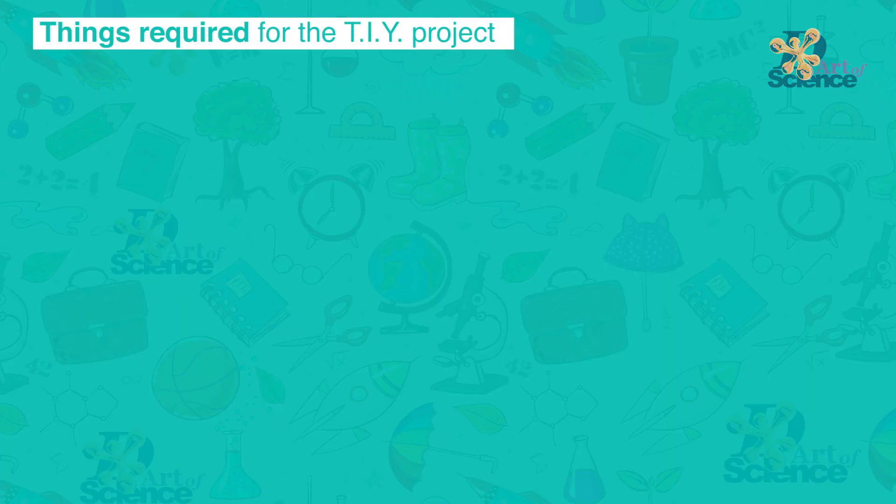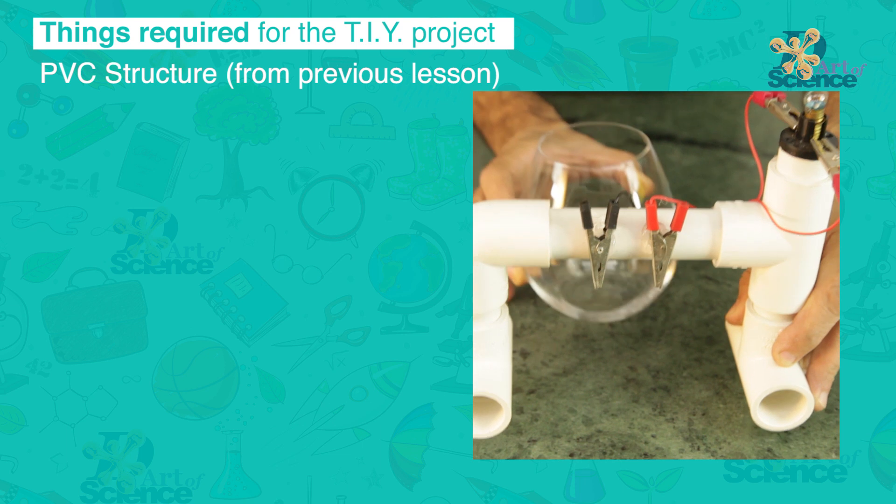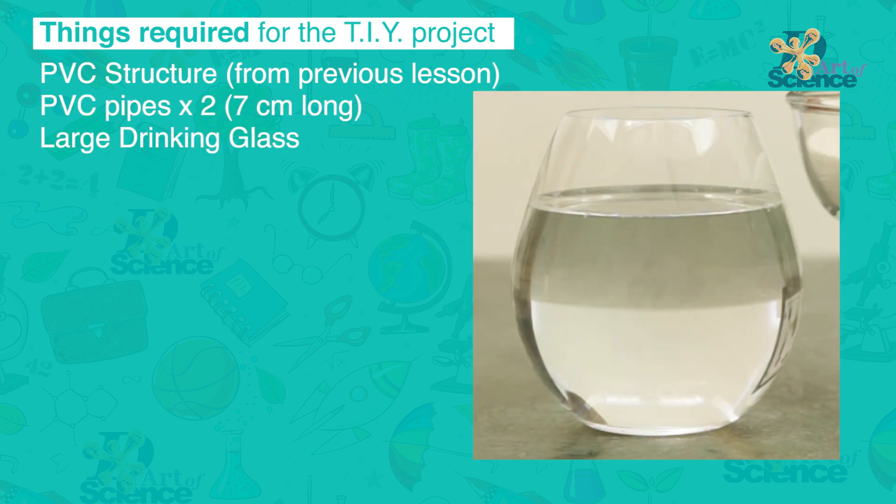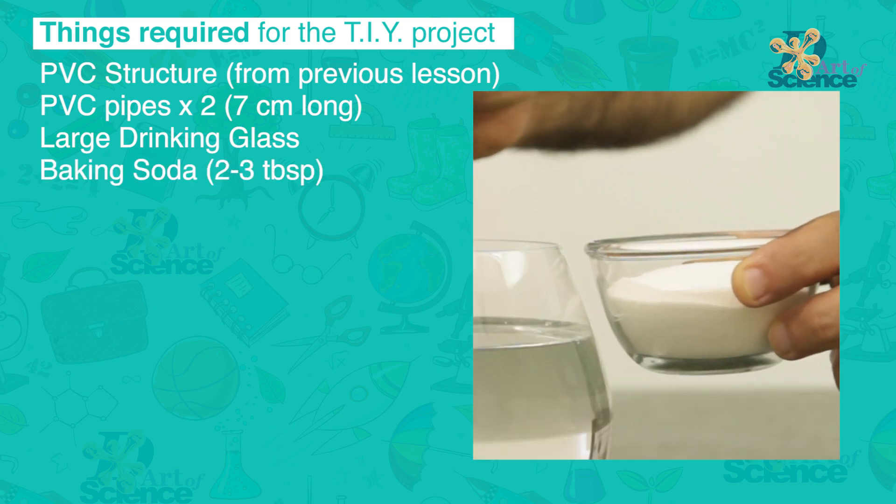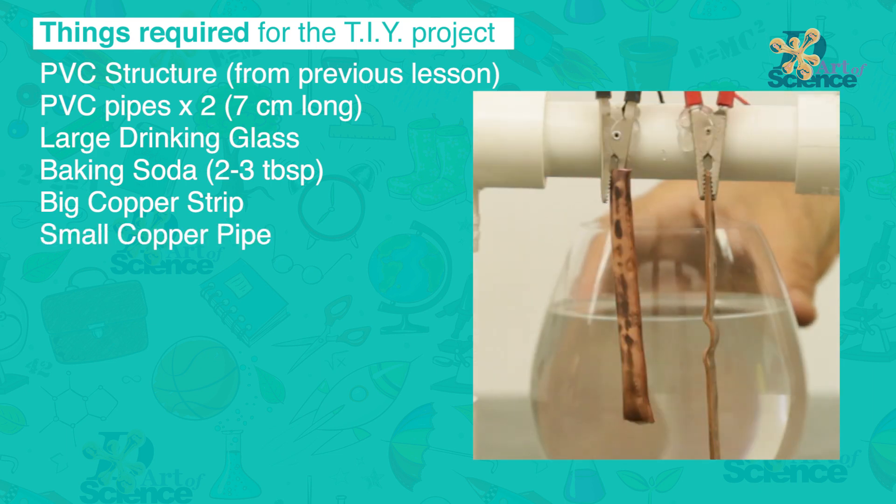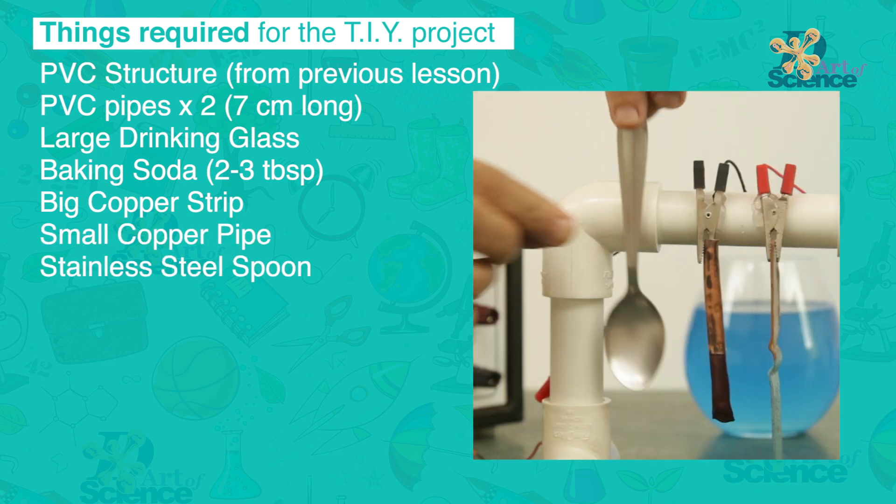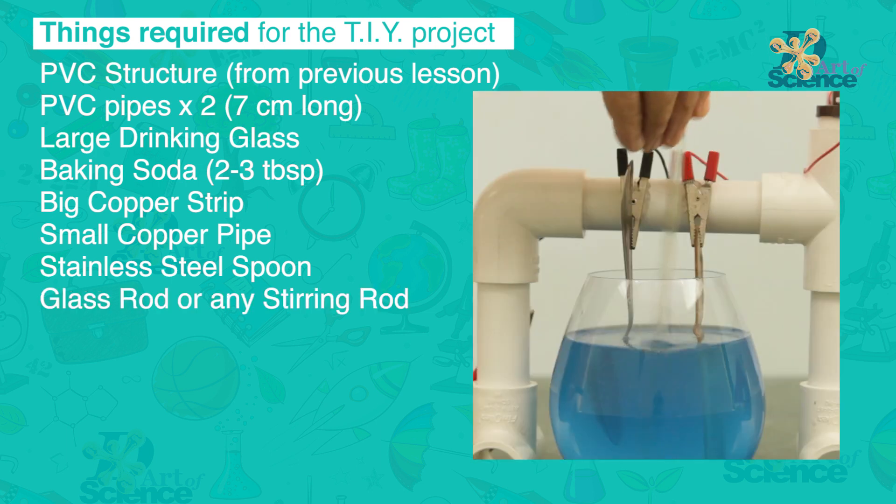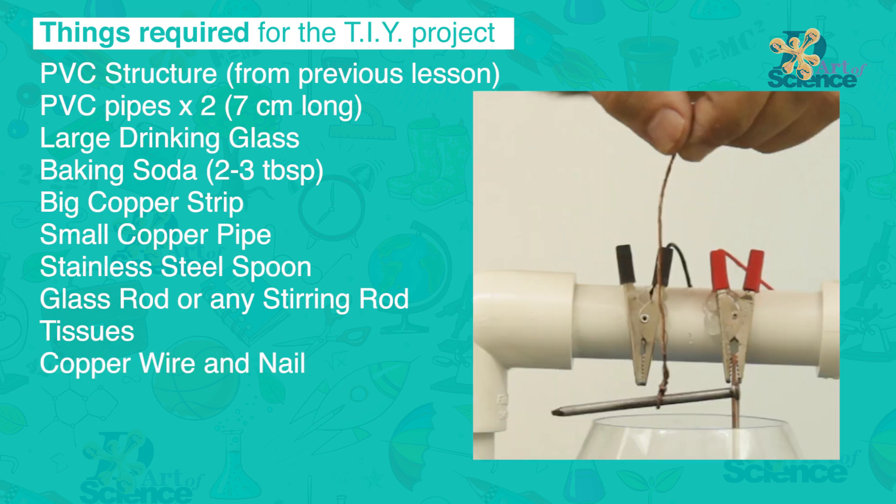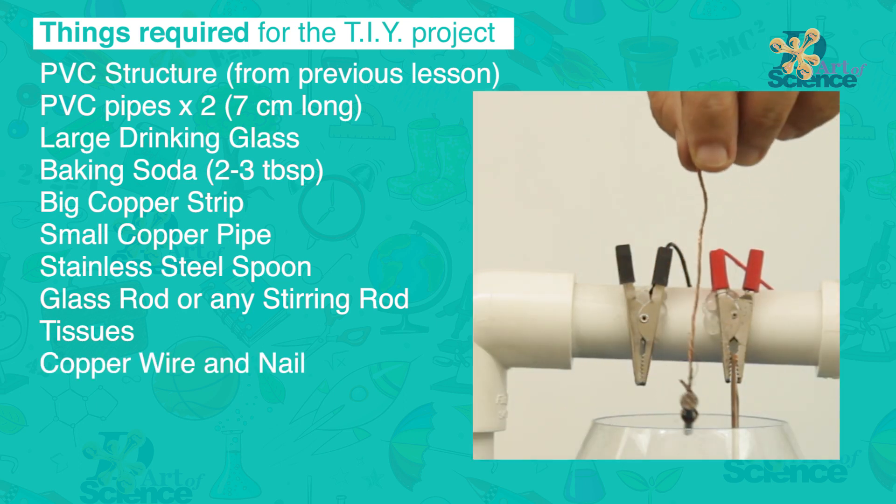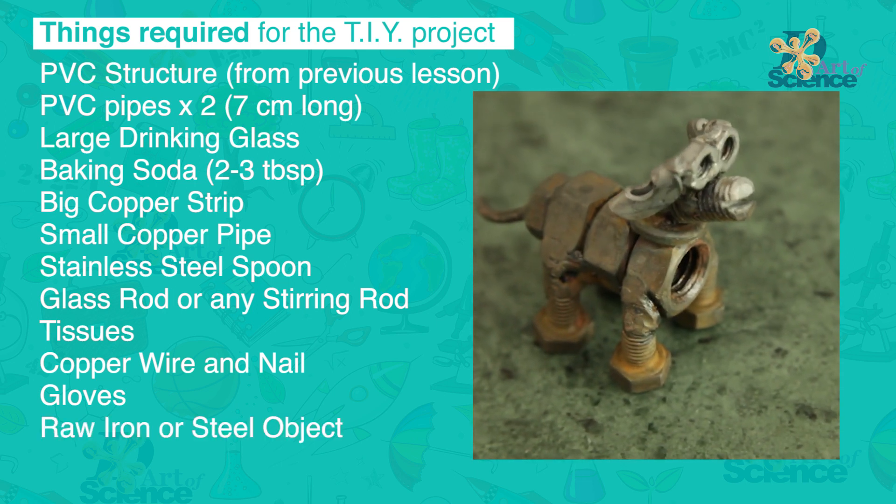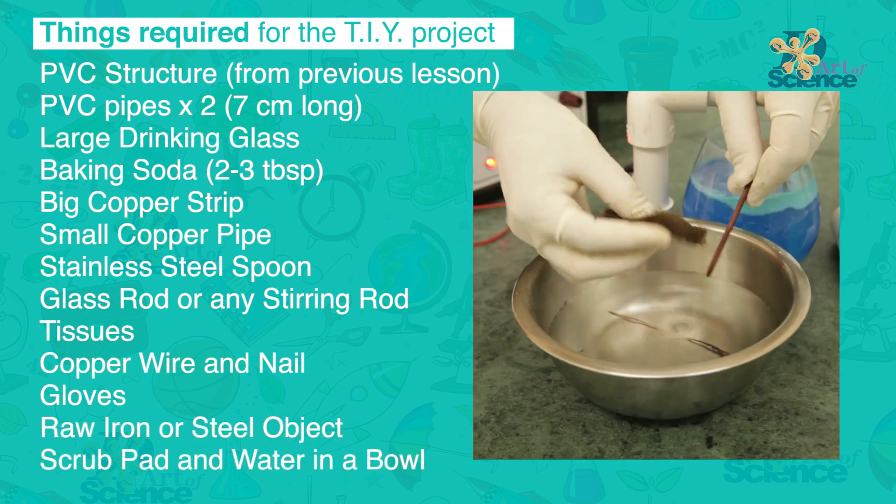Things required for the DIY project: PVC structure from the previous lesson, PVC pipes two numbers 7 cm long, large drinking glass, baking soda 2 or 3 tablespoons should be good enough, big copper strip or pipe, small copper pipe, stainless steel spoon, glass rod or any stirring rod, tissues or cloth, copper wire and nail, gloves or surgical gloves, raw iron or steel object that you want to copper plate, scrub pad and water in a bowl.